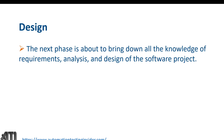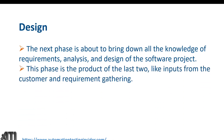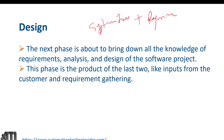Now here comes the design part. The system architect is involved in this phase. This phase is about bringing together all the knowledge from the requirements and documents prepared earlier — analysis and design of the software project. This phase is the product of the last two phases: system investigation plus requirement analysis. In this phase we build high-level design and low-level design.